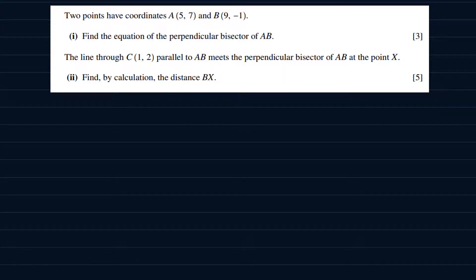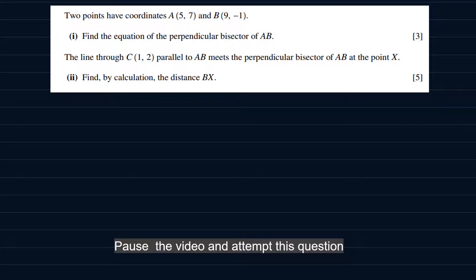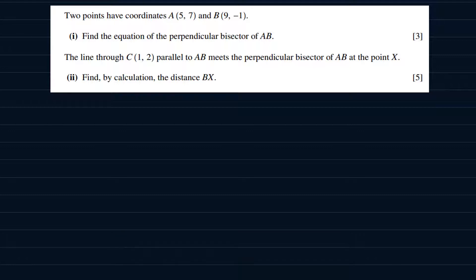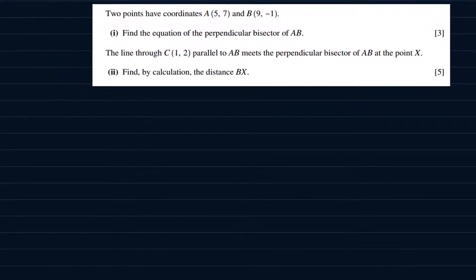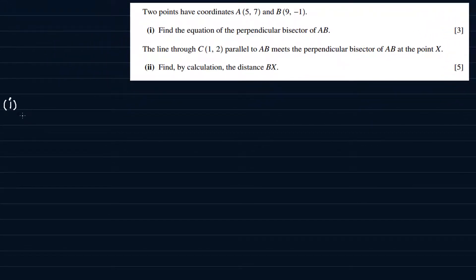Now, let us look at this question here. I would want you to study it and try to attempt it just for a few minutes. So let's start with part number one. The question asks us to find the equation of the perpendicular bisector of AB, and we've been given the coordinates of A and B.